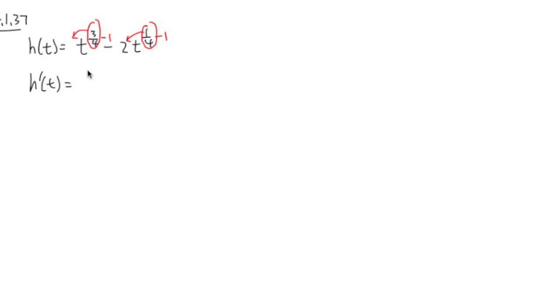On the first part, I will get 3 over 4 t, 3 over 4 minus 1. It's the same as 3 over 4 minus 4 over 4. That's going to be negative 1 over 4.